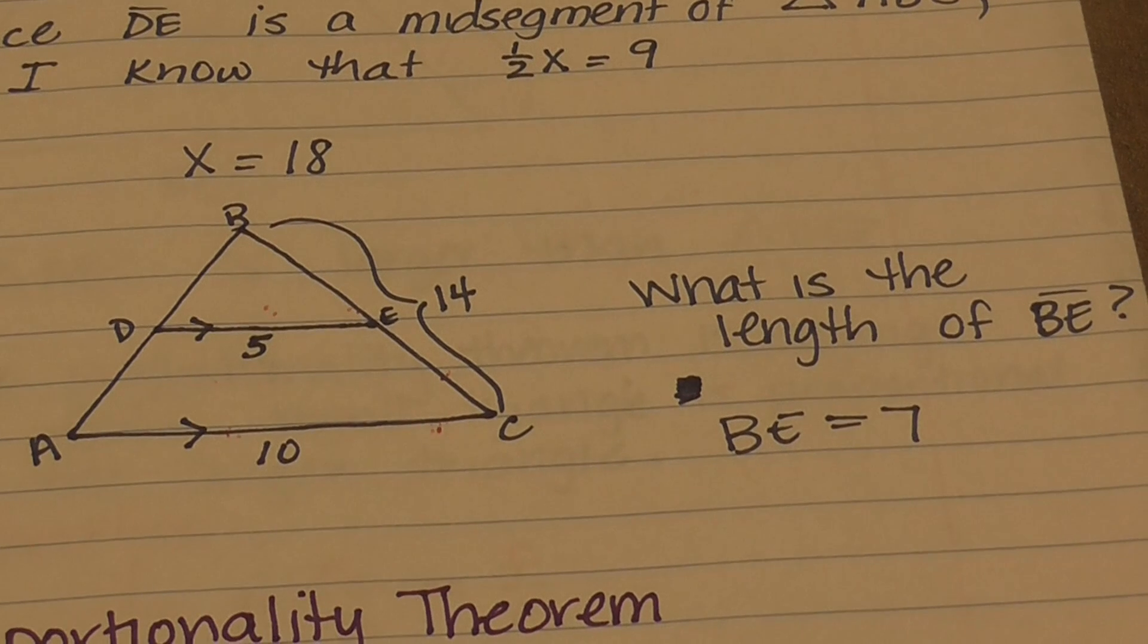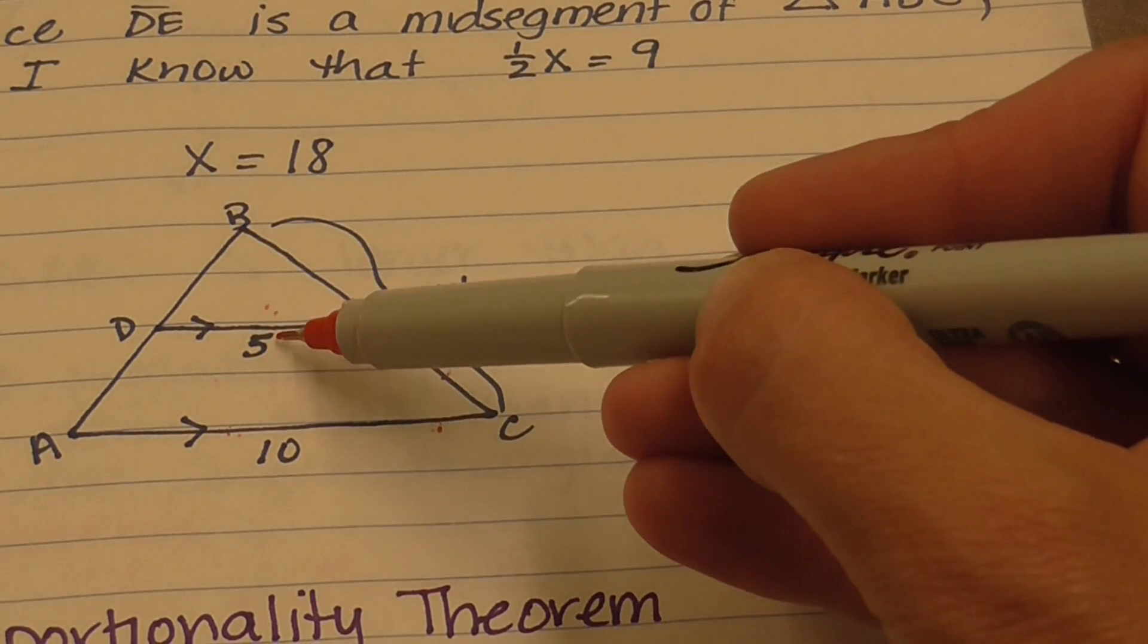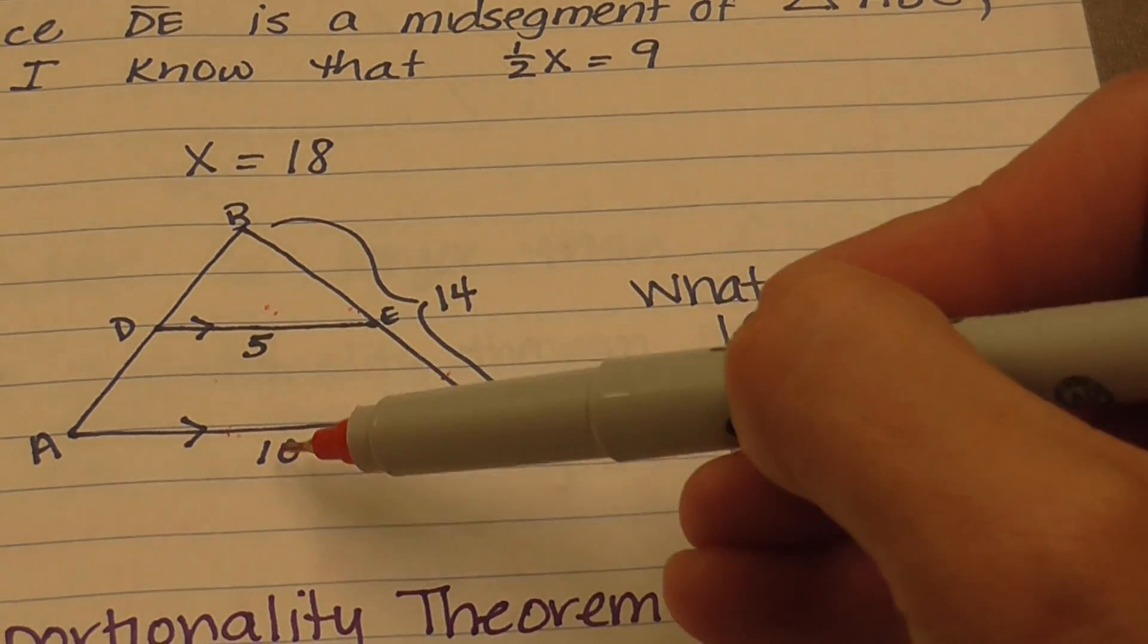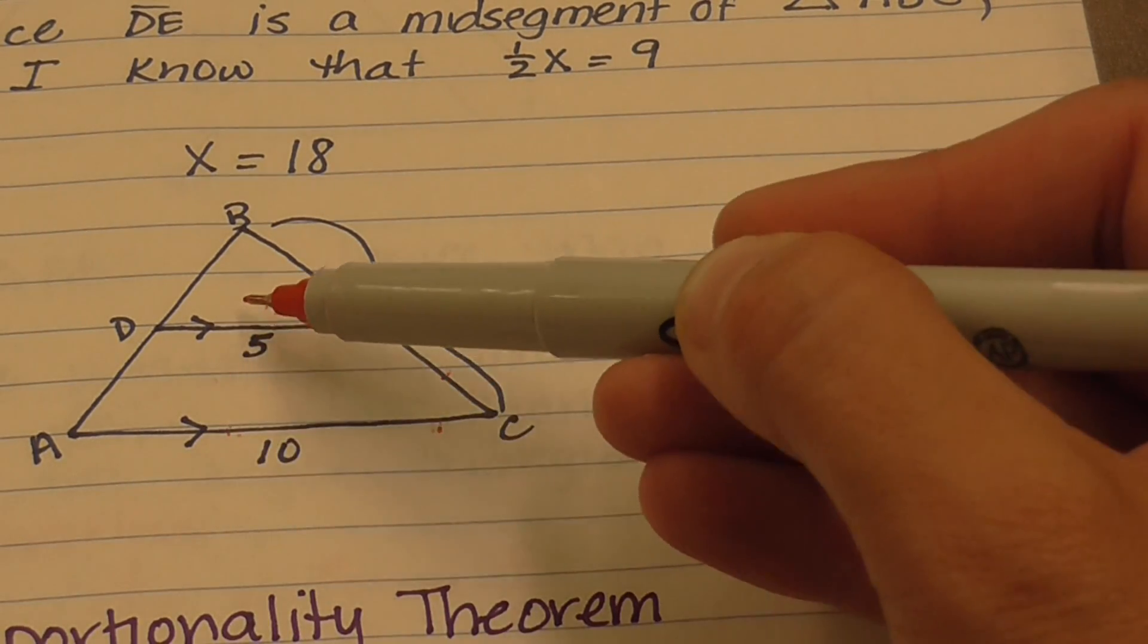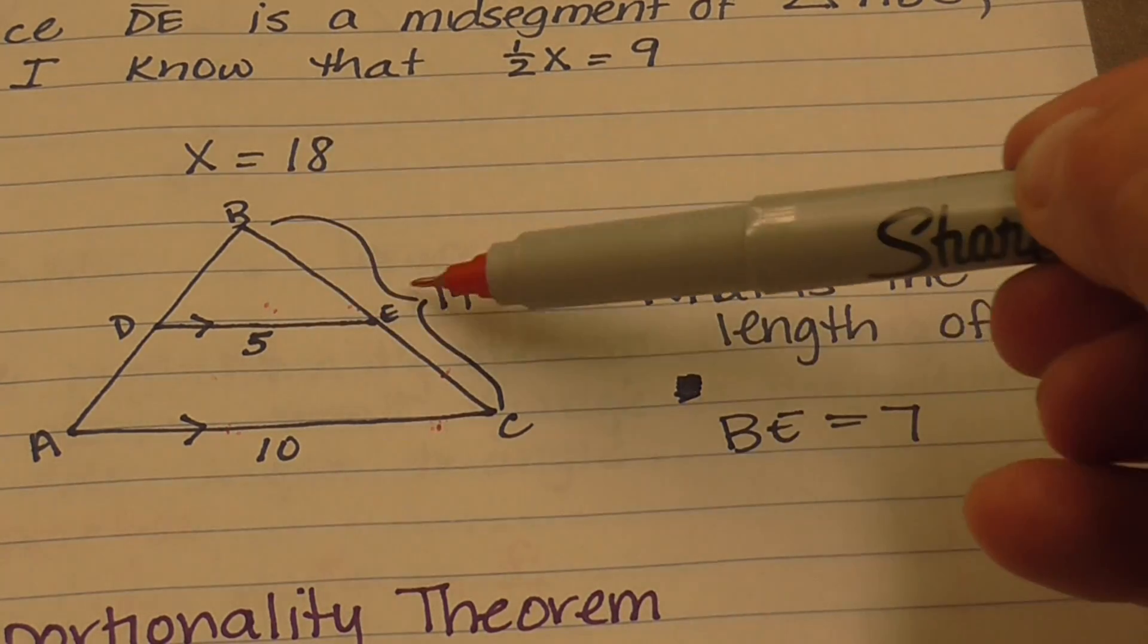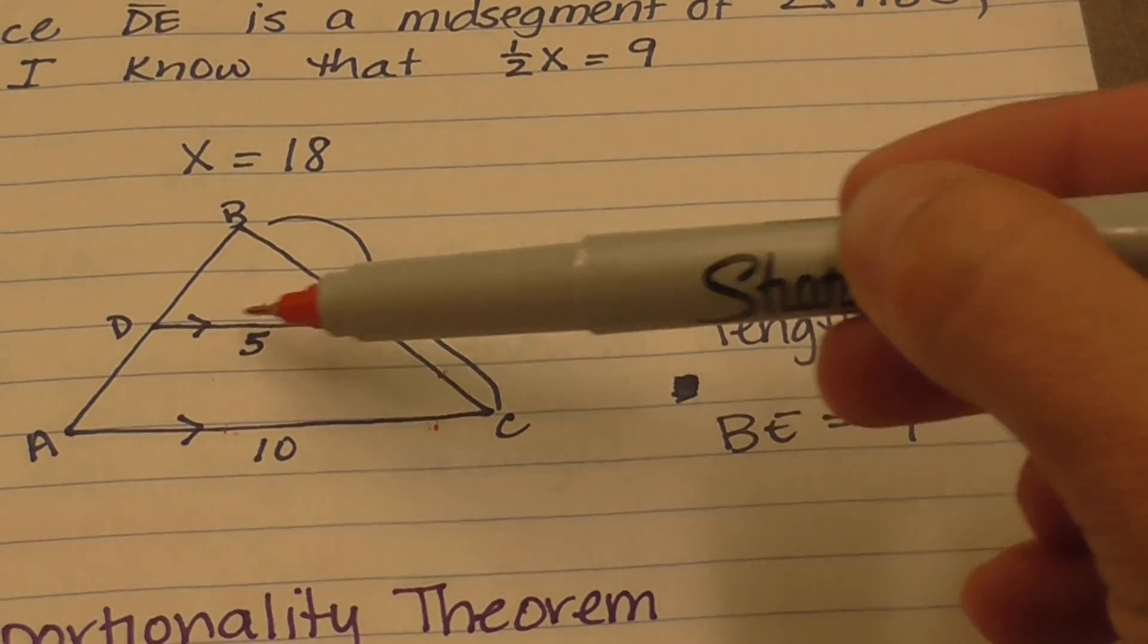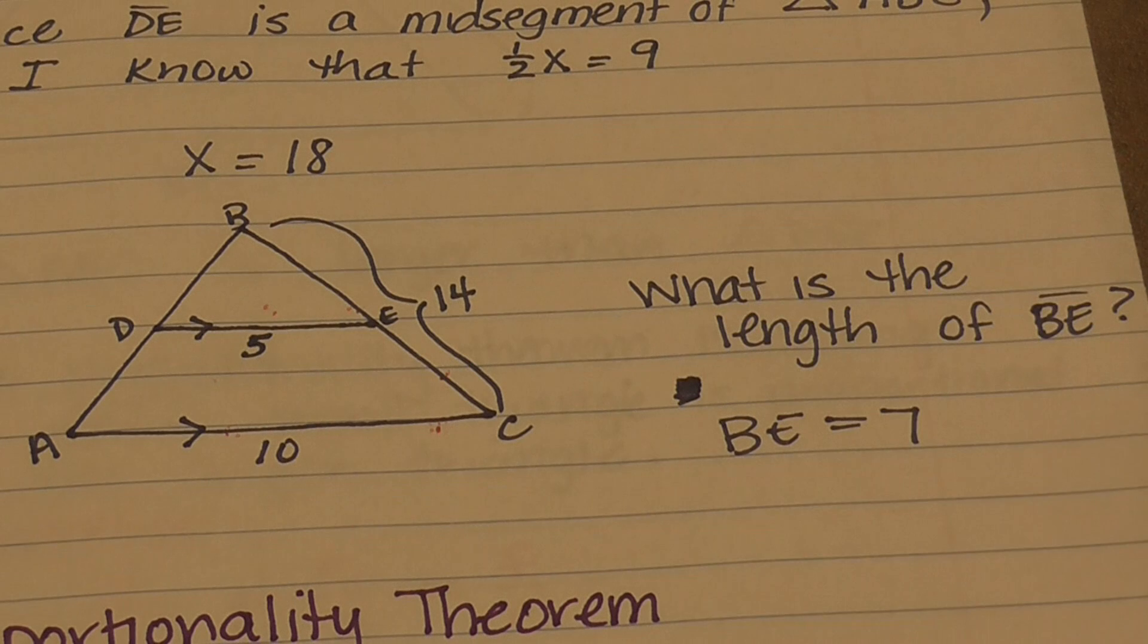Another example would be: what would be the length of BE? This already tells you that this segment is half of the length of the side of the triangle, and these two lines are parallel. Knowing that, I know this is the mid-segment. If this entire length is 14 and this is the mid-segment, each piece here is half that distance, which is 7. Therefore, BE has a length of 7.